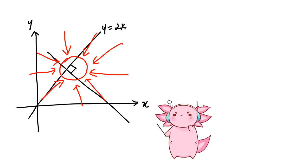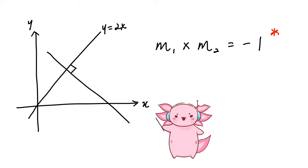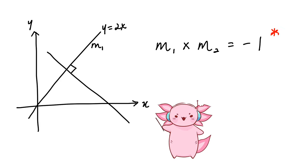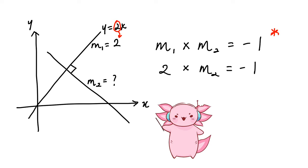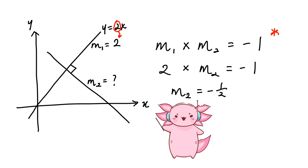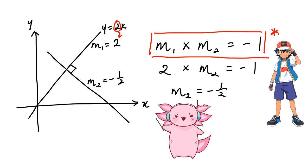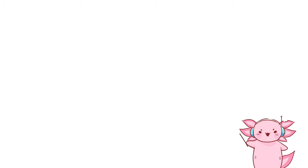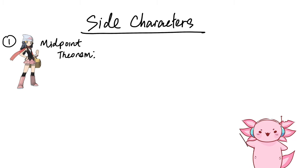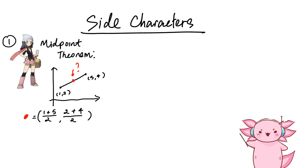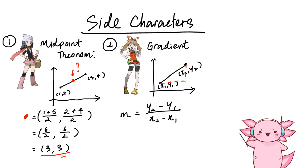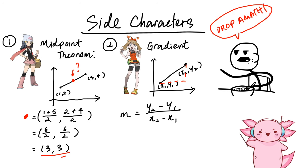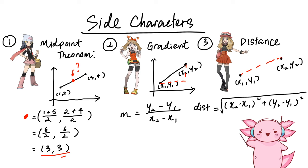For coordinate geometry, anytime you see a 90-degree angle, use the formula M₁ × M₂ = −1. If M₁ = 2, then M₂ = −0.5. This formula is our main character. Side characters include the midpoint theorem (average of x and y values), the gradient formula, and the distance formula from E-Math. There's also the shoelace method for weird area shapes: put ½ outside a box, place one point at both ends, go counterclockwise, then add downward diagonals minus upward diagonals.